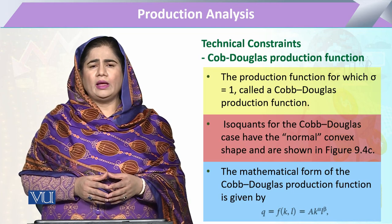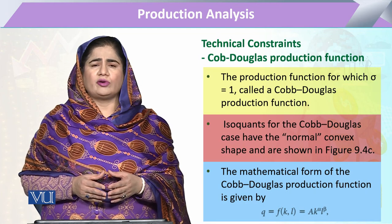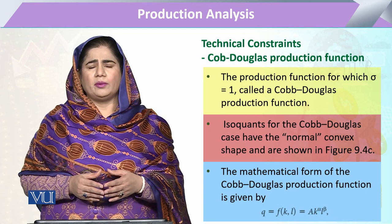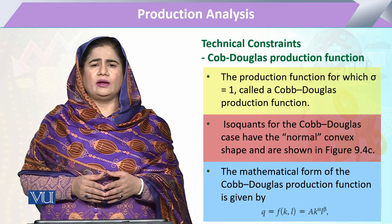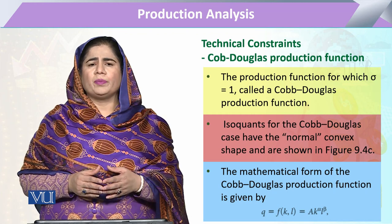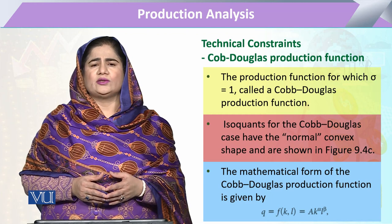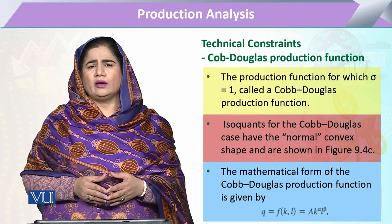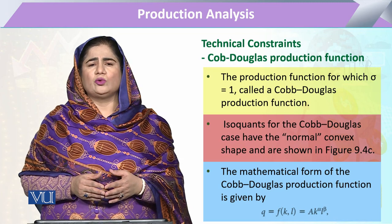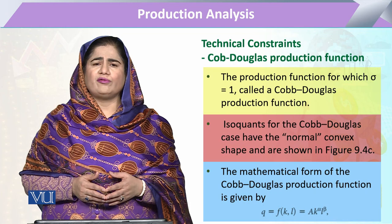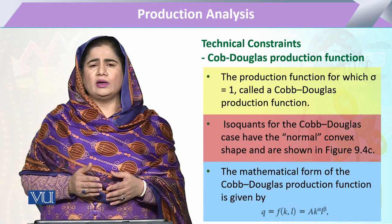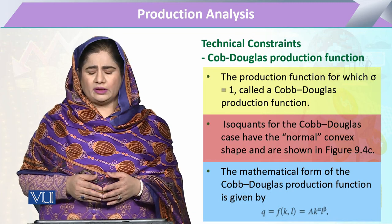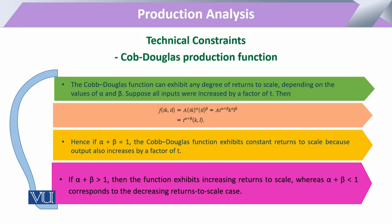The mathematical form of the Cobb-Douglas production function is: quantity Q is a function of capital K and labor L, equal to A times K to the power alpha and L to the power beta, where A represents technology, alpha and beta are the respective output elasticities of capital and labor.